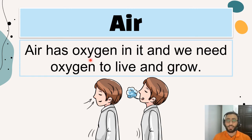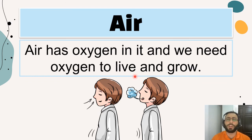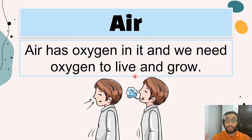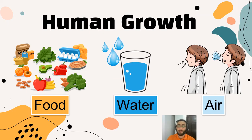Next is air. You already know how important air is for you to live and grow, because air has oxygen. We need oxygen to live and grow. Hold your breath — you're going to run out, right? You cannot hold it. If you hold your mouth shut, you cannot breathe. Air is very important for us to live and grow because air has oxygen. When we breathe, we get energy.